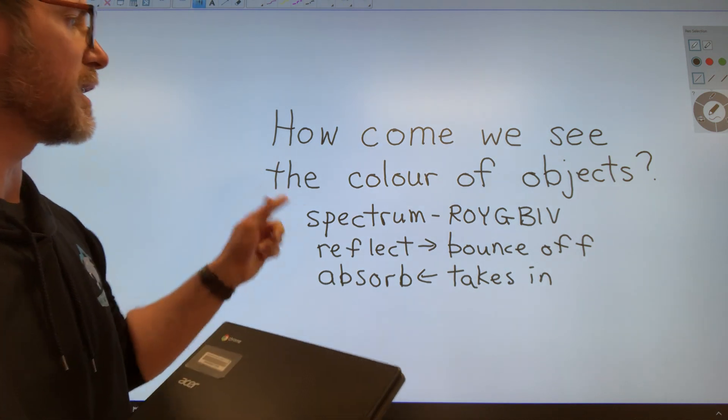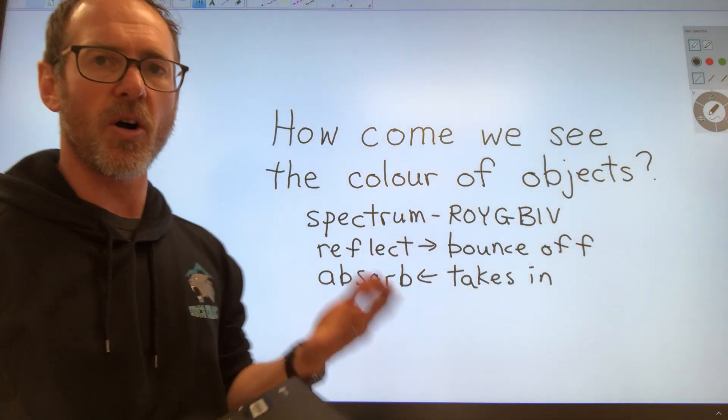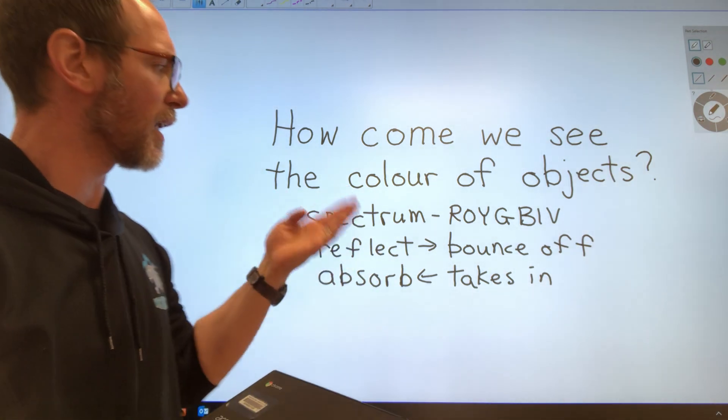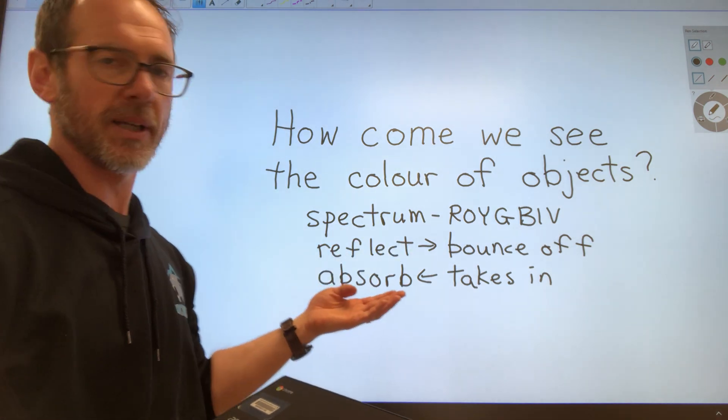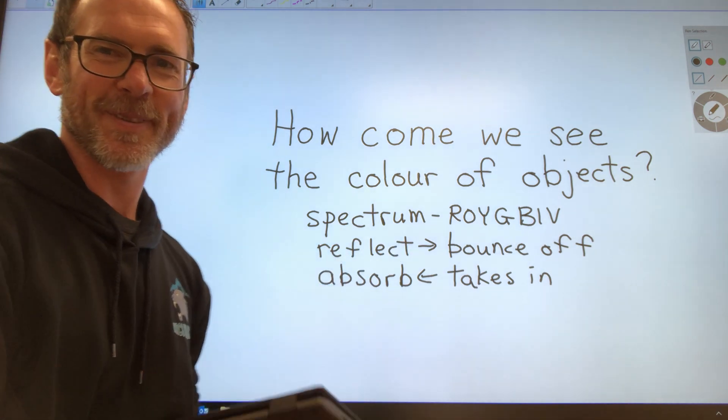So how can we see the color of objects? Well, it all depends on what colors are being reflected and what colors are being absorbed. All right, guys. Thank you.